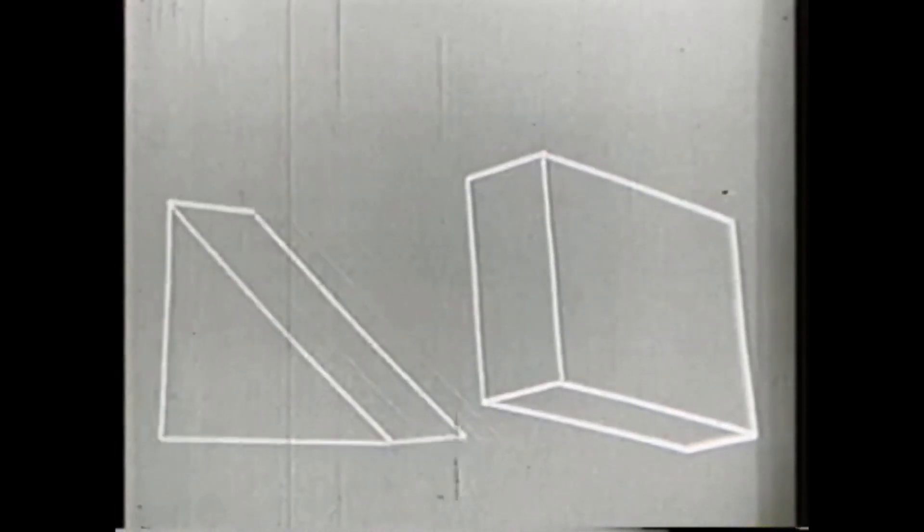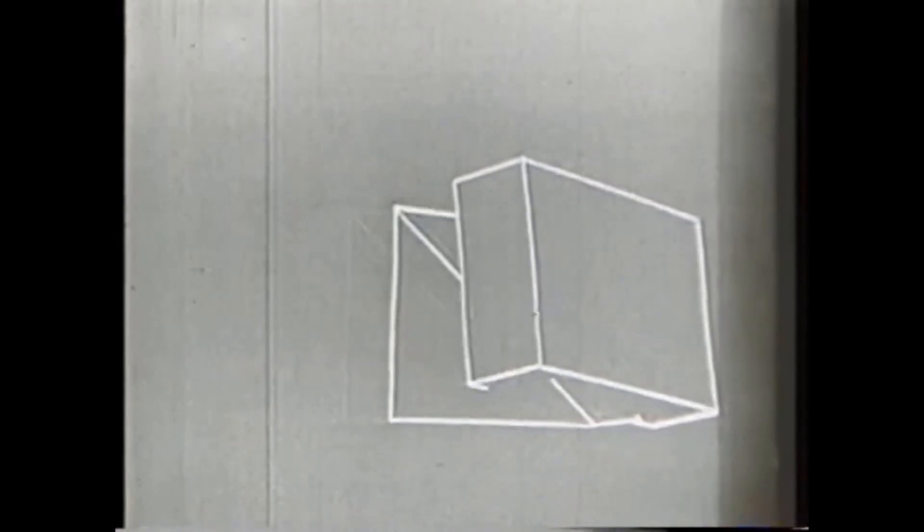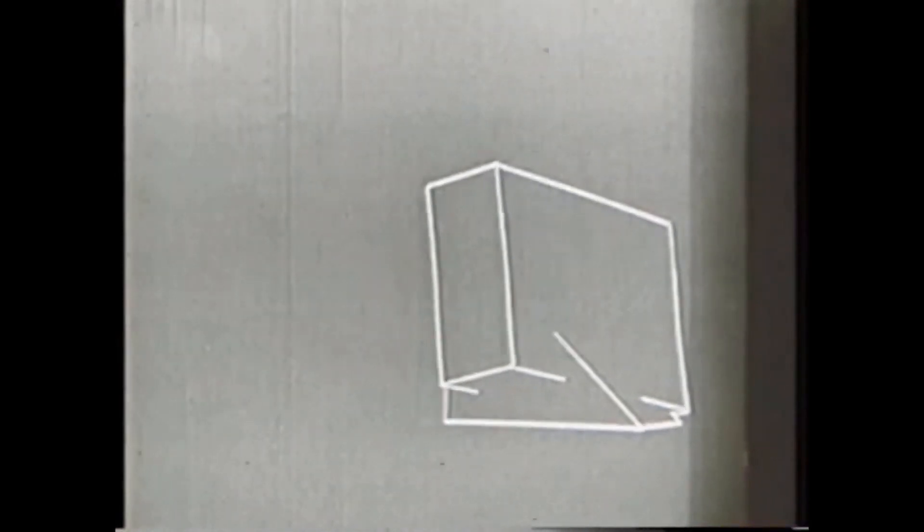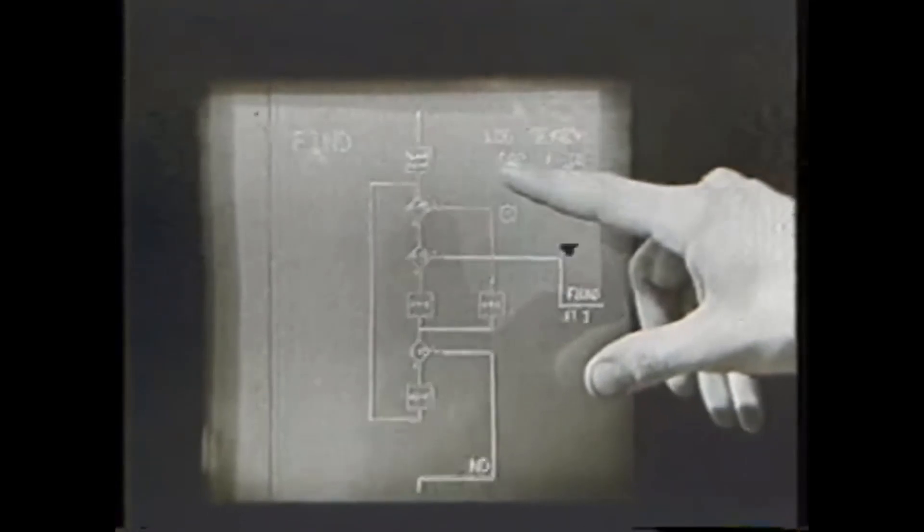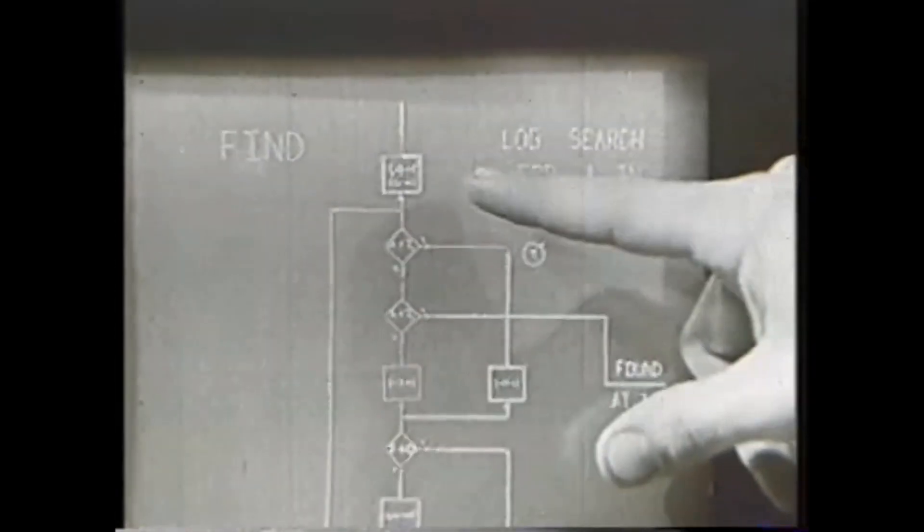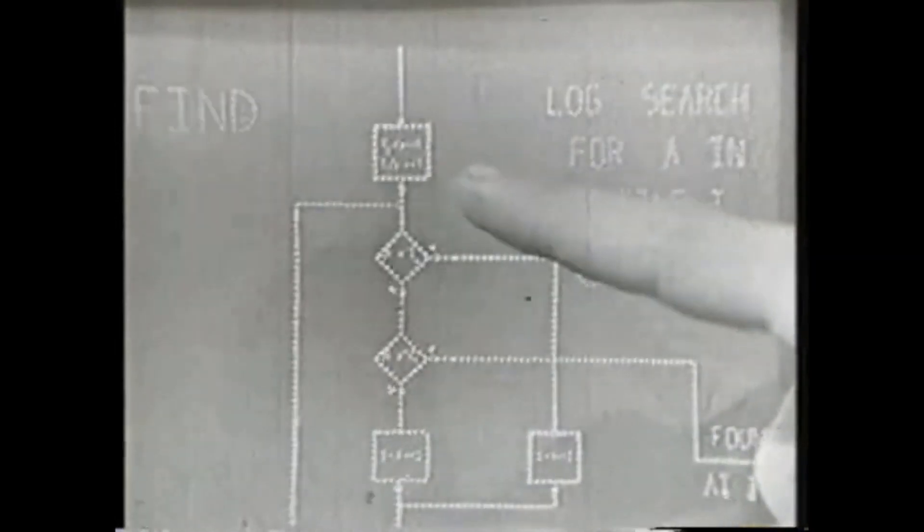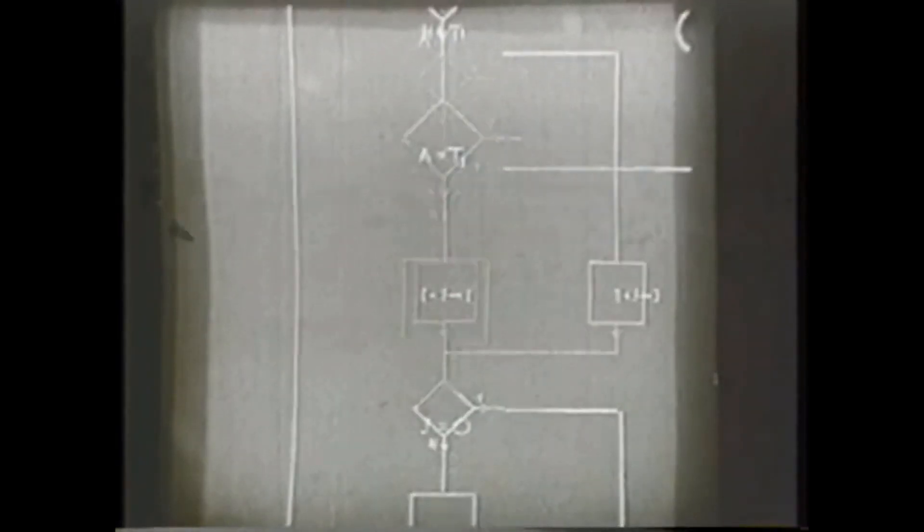It uses drawing as a novel communication medium for a computer. The system contains input, output, and communication programs which enable it to interpret information drawn directly on a computer display. For example, the graphical user interface was derived from Sketchpad, as well as modern object-oriented programming. Ivan demonstrated with it that computer graphics could be used for both artistic and technical purposes in addition to showing a novel method of human-computer interaction.